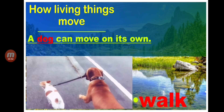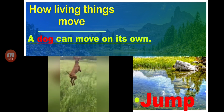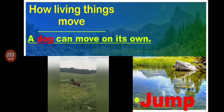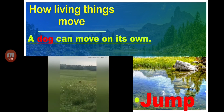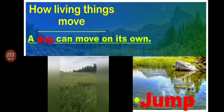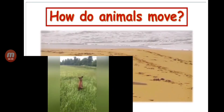Now, a dog can also move on its own by jumping. Look at this — this dog is so happy, it's jumping and jumping! That is how a dog moves on its own.